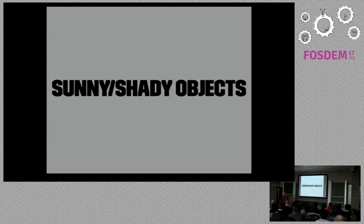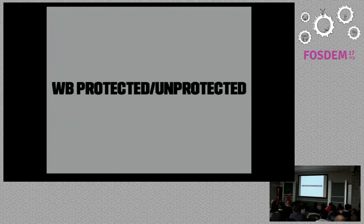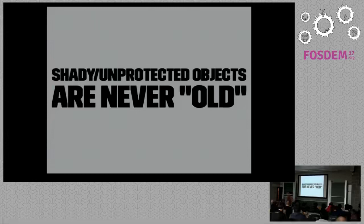To solve this, we have the write barrier — a barrier for detecting whenever an object creates a reference to another object. The write barrier implements what was originally called sunny and shady objects, now called write-barrier-protected and unprotected. Sunny objects are protected by write barriers; shady objects are not. With a sunny object, we can track when new references get added. Shady objects we can't track, so we have to check them every single garbage collection — both minor and major.